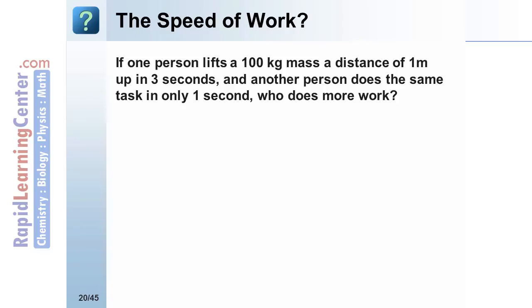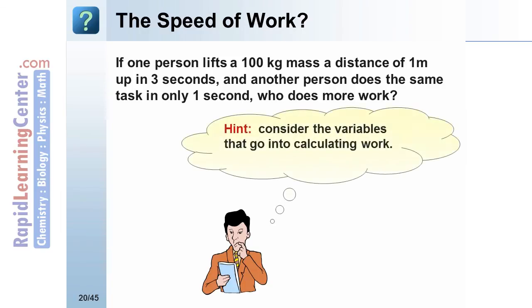The speed of work. If one person lifts a hundred kilograms a distance of one meter up in three seconds, and another person does the same thing in only one second, who does more work? Be sure to consider the variables that go into calculating work. What quantities are used in our work formula?